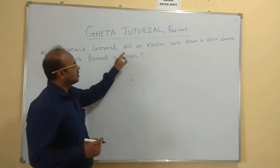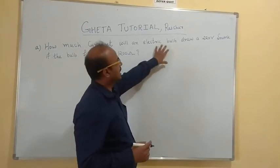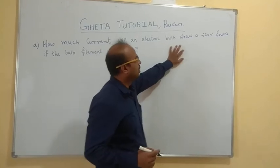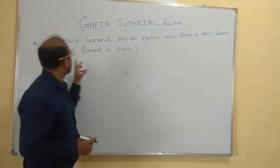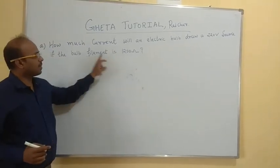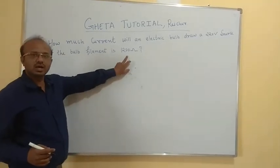How much current will an electric bulb draw from a 220 volt source if the bulb filament is 1200 ohm?